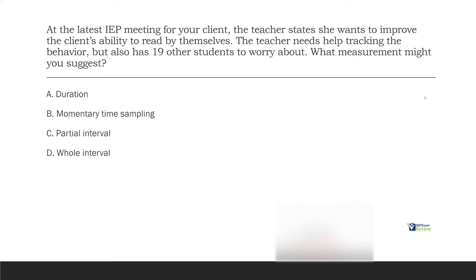Question two: At the latest IEP meeting for your client, the teacher states she wants to improve the client's ability to read by themselves. The teacher needs help tracking the behavior but also has 19 other students to worry about. What measurement might you suggest? We've done something similar to this question, but we've gotten a lot of questions about when to use what type. We wanted to go over it again just to hammer the point home.